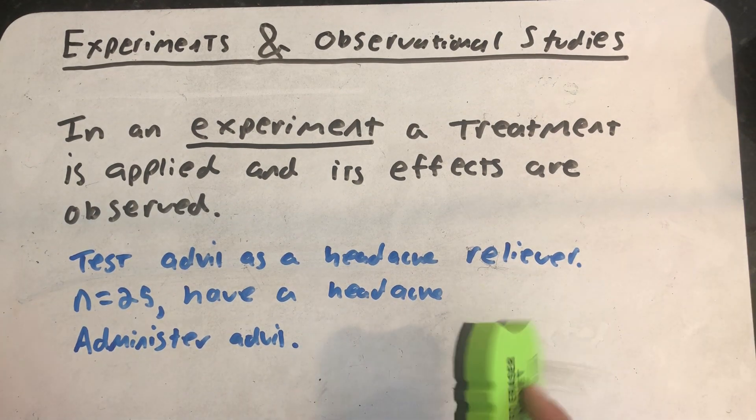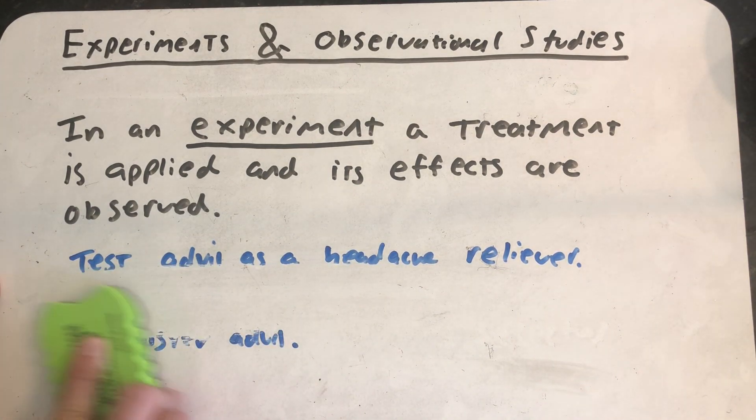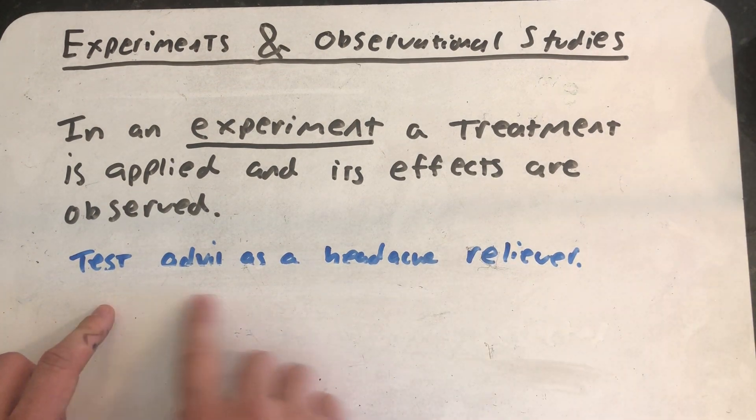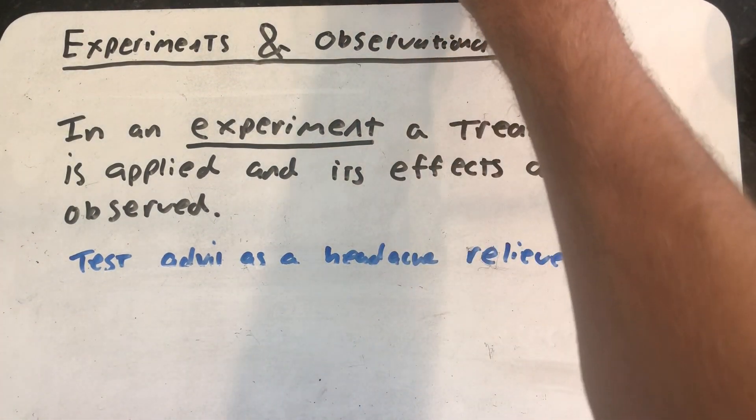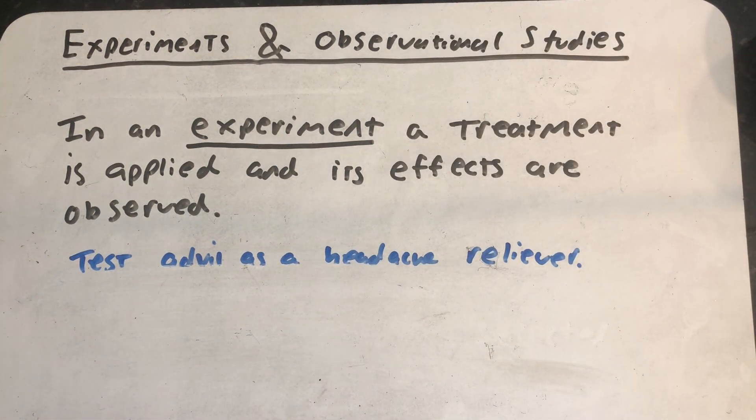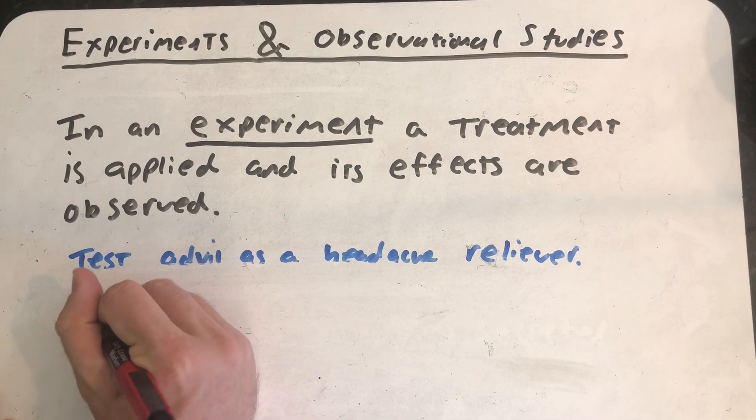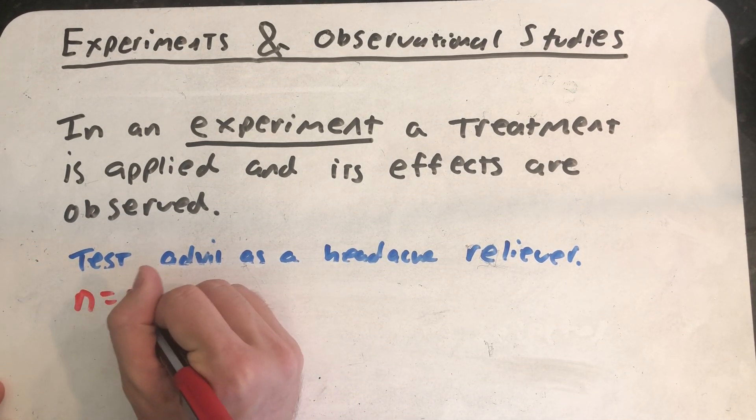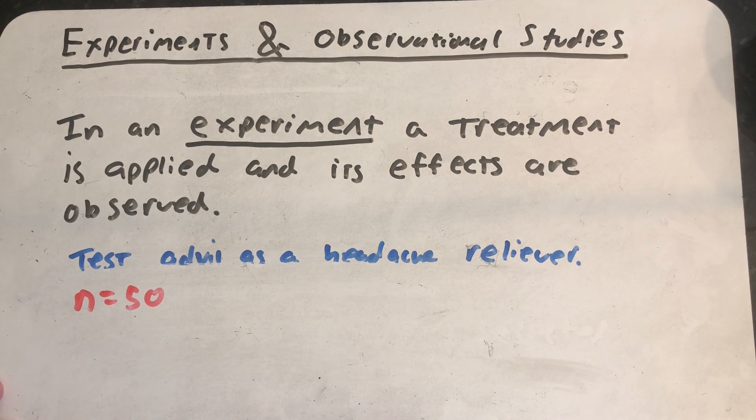So what I want to imagine now is a better way of designing that experiment. I still want to test Advil as a headache reliever. But this time I want to get a larger sample, which always makes a statistical study better. And I'm going to divide that sample into two groups.